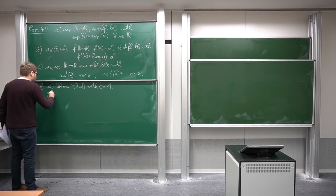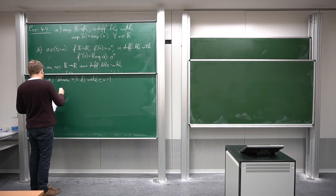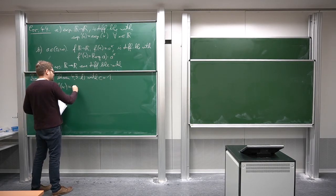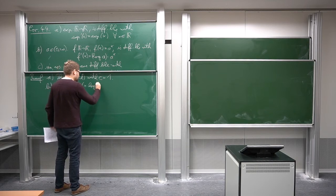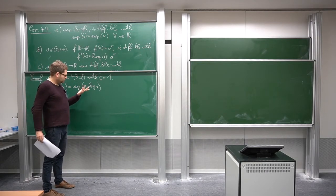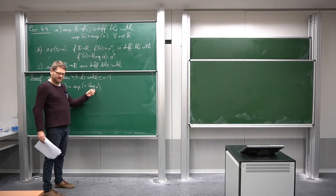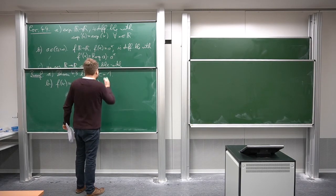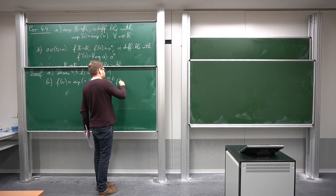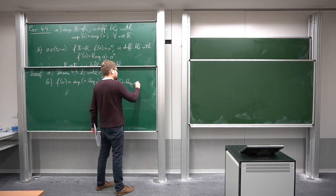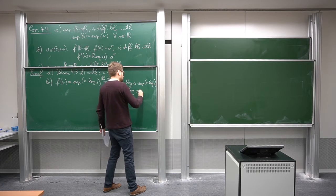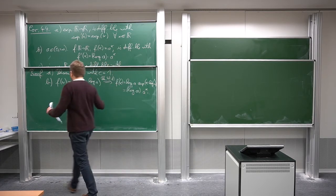For part b, we just need to rewrite a to the power of x by its definition. By definition, these general powers are exp(x times log a). So this is again the situation from the previous example, with some constant times x, which is log a in this case. By theorem 4.3d, we get that f prime of x is log(a) times exp(x log a), which is log(a) times a to the x. So this is also a special case.